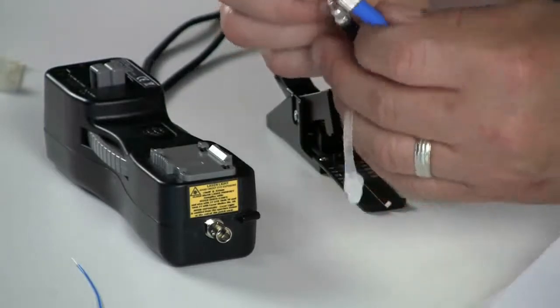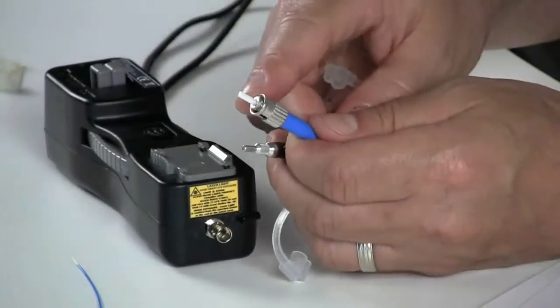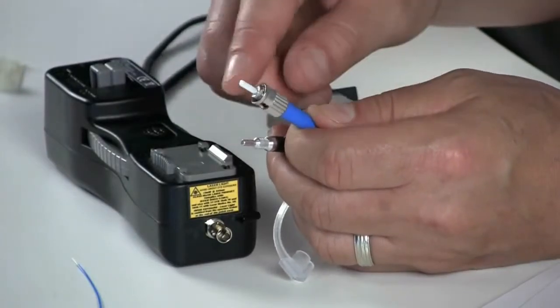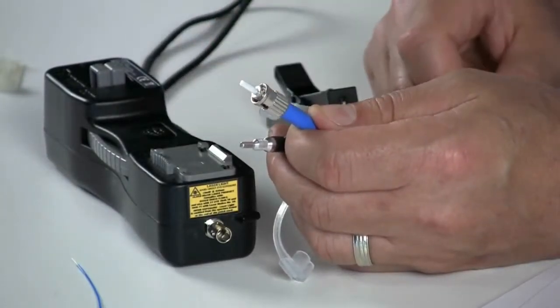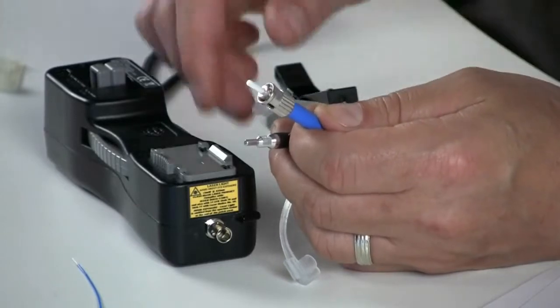Secondly, check the end face of the VFL cord that is utilized in the termination process. You can utilize a video scope or a handheld scope to look at the end face. If the end face is dirty, utilize a kim wipe or a cassette cleaner to clean that.